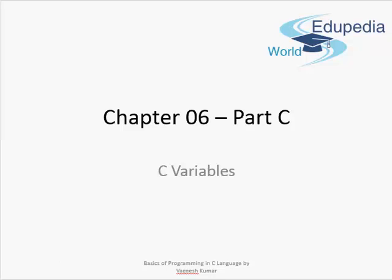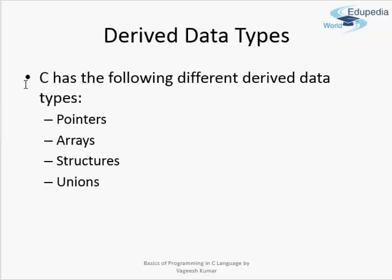Hello friends and welcome to Edupedia World videos. This is Chapter 6 Part C of the Basics of C Programming Language, and we are continuing our topic C Variables. Now we shall study about the derived data types.